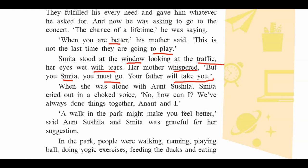When she was alone with Aunt Sushila, Smita cried out in a choked voice — not loudly, meaning struggling to speak while crying. She said, 'No, how can I — we have always done things together, Anant and I.' This shows the love of the sister. Smita felt it was wrong to go to the concert without her brother.